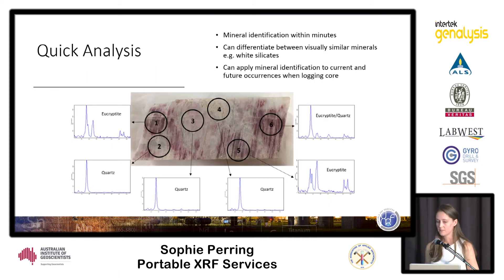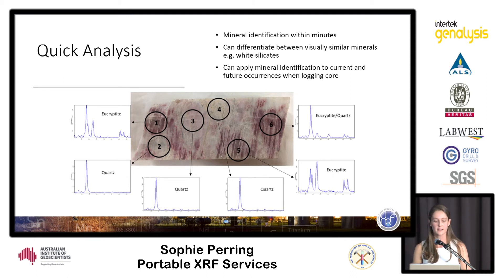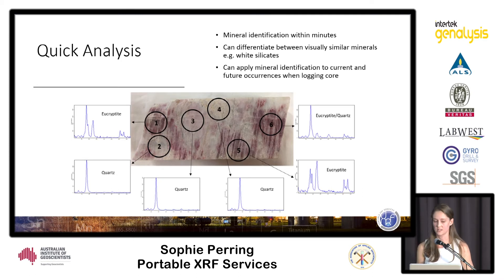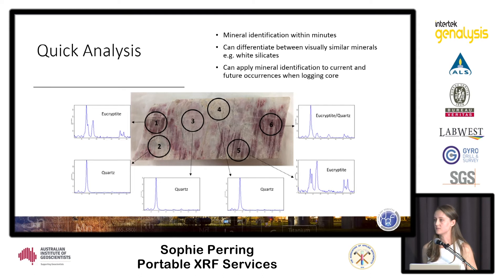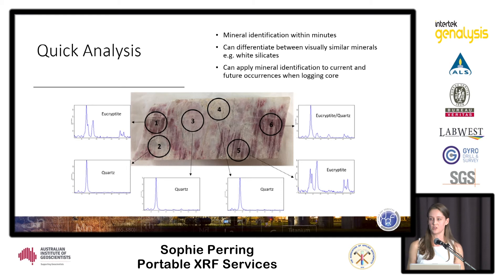For a visual example: this was a piece of core received from a client and we were able within just a few minutes to identify the main zones where visual identification was uncertain. We could pick out areas of spodumene and quartz, and while this is informative for the direct zone from where this core came, it is then informative to a field geologist that they can apply for future occurrences of similar mineralisation.